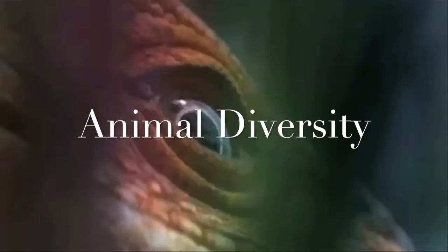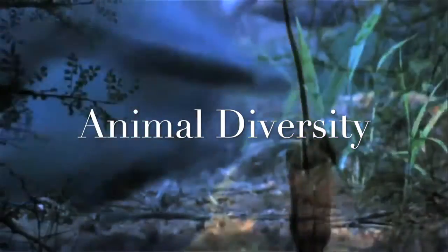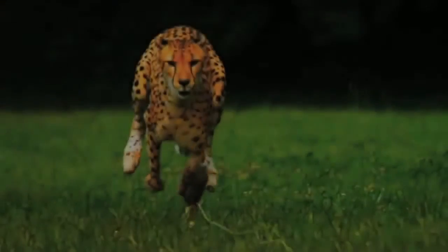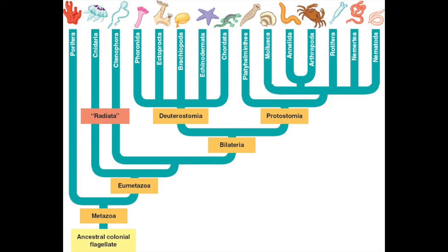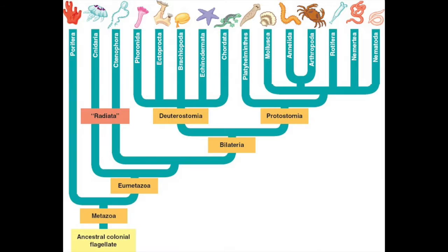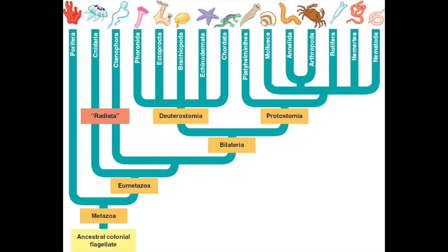Animal diversity. How come there is such a diversity of animals on this planet and how are they related? We can use a phylogenetic tree to show animals' evolutionary relationships to one another. All animals developed from a common ancestor — the colonial protists. They then evolved to be one unit which either had no tissues, as in the first animals, or two tissues. This is the first division.